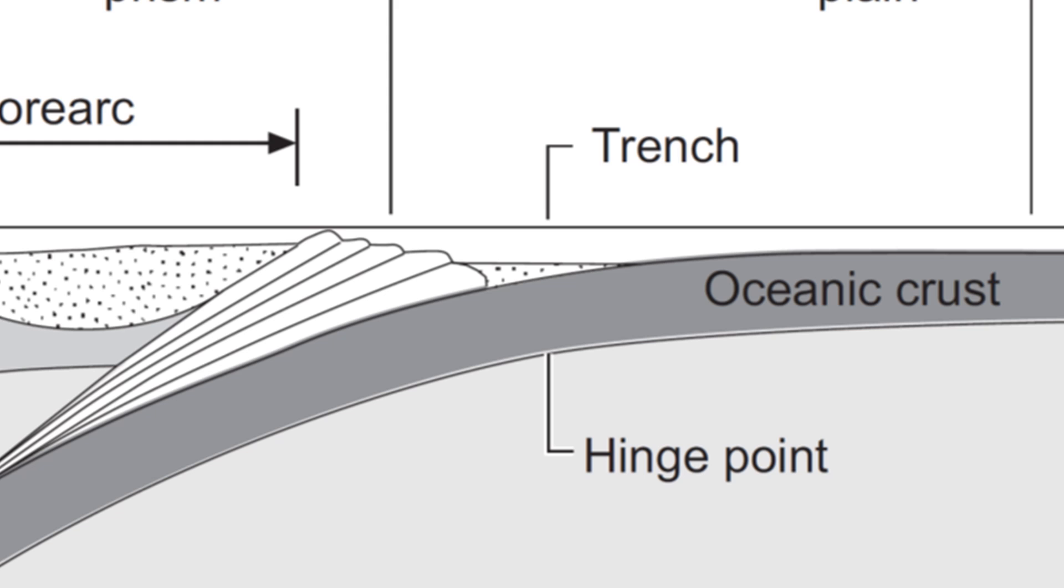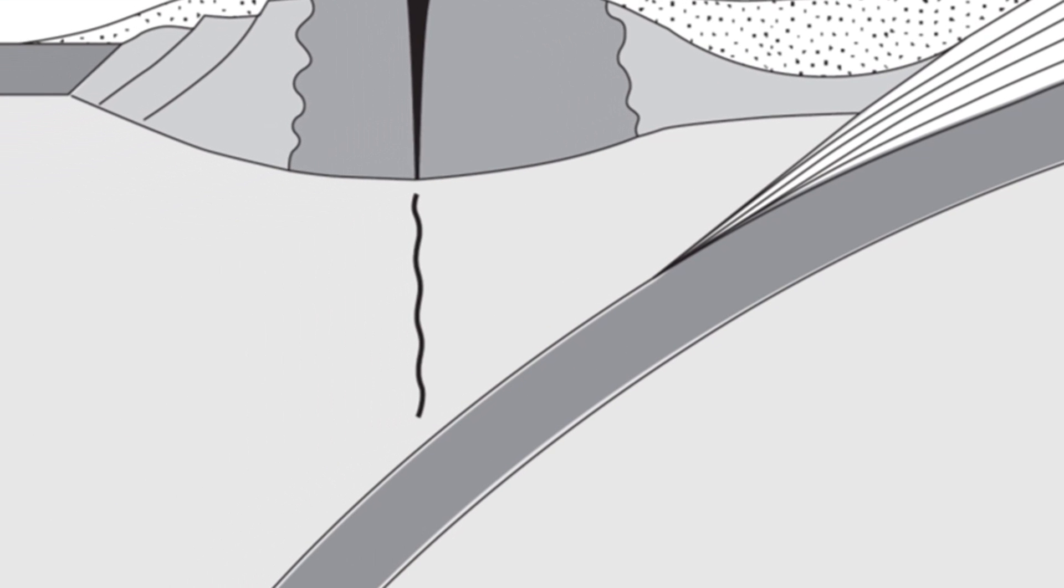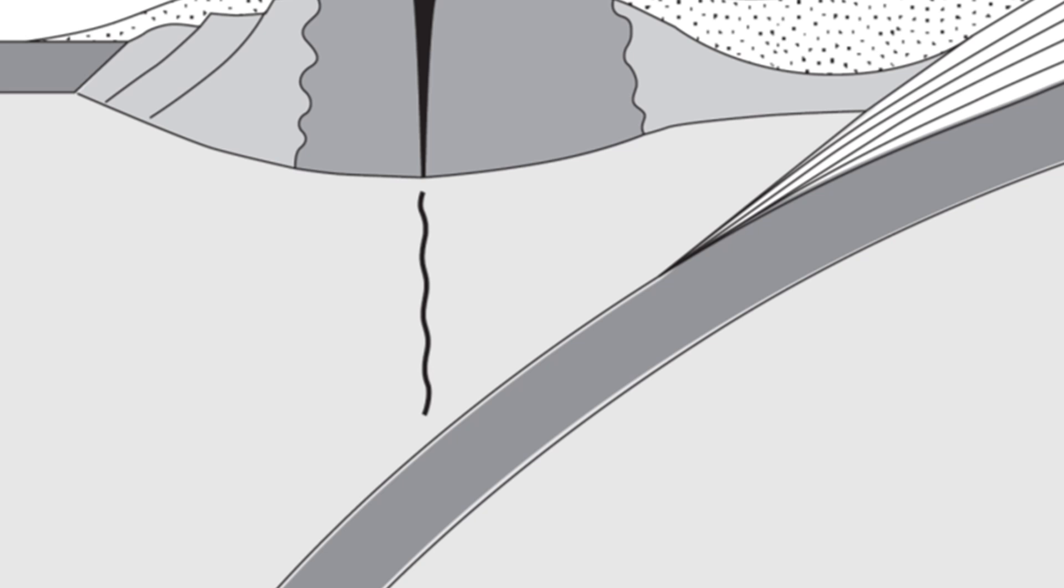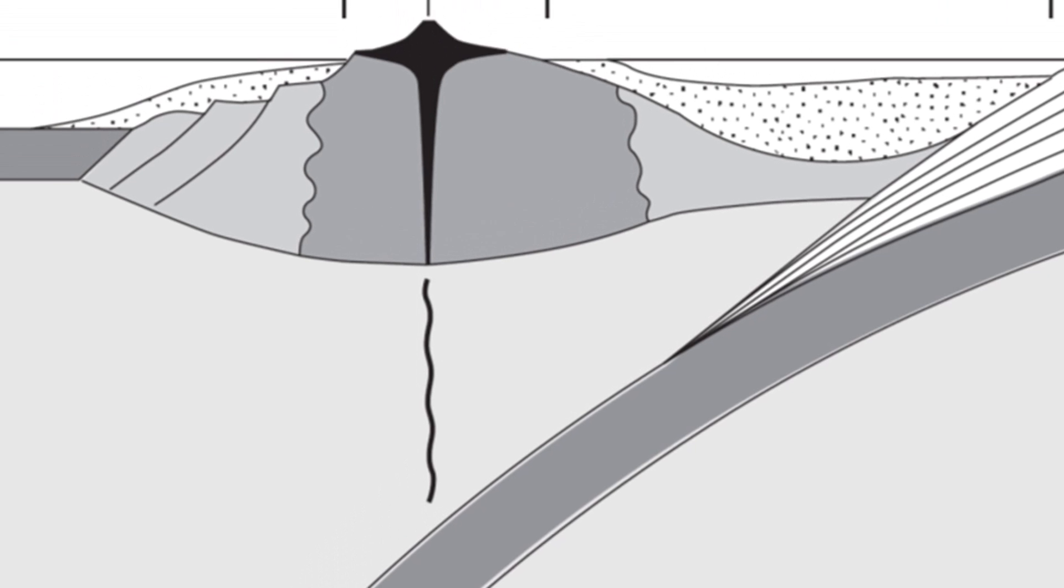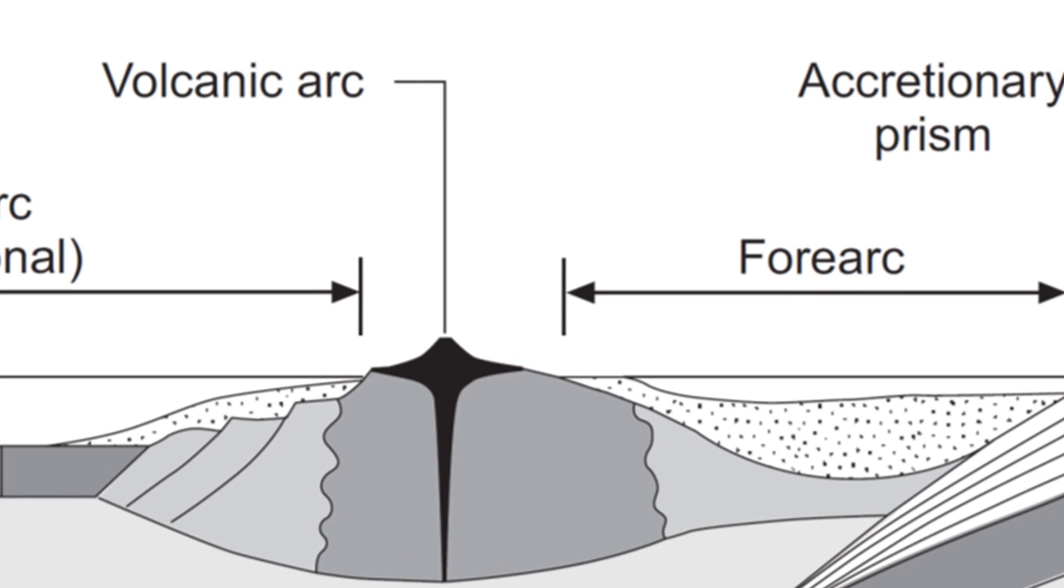There, it melts, releasing vapors and minerals that rise to the surface as magma, creating a line of volcanoes called a volcanic arc.